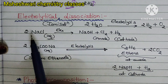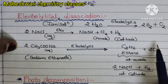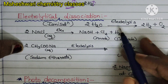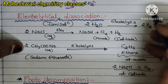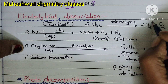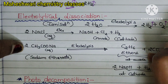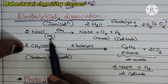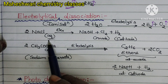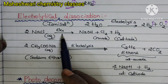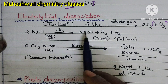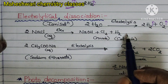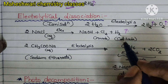Today's topic is electrolytic dissociation. Water involves electrolysis and it gives hydrogen gas and oxygen gas. Next, sodium chloride in aqueous condition involves electrolysis and gives sodium hydroxide, chlorine gas, and hydrogen gas.